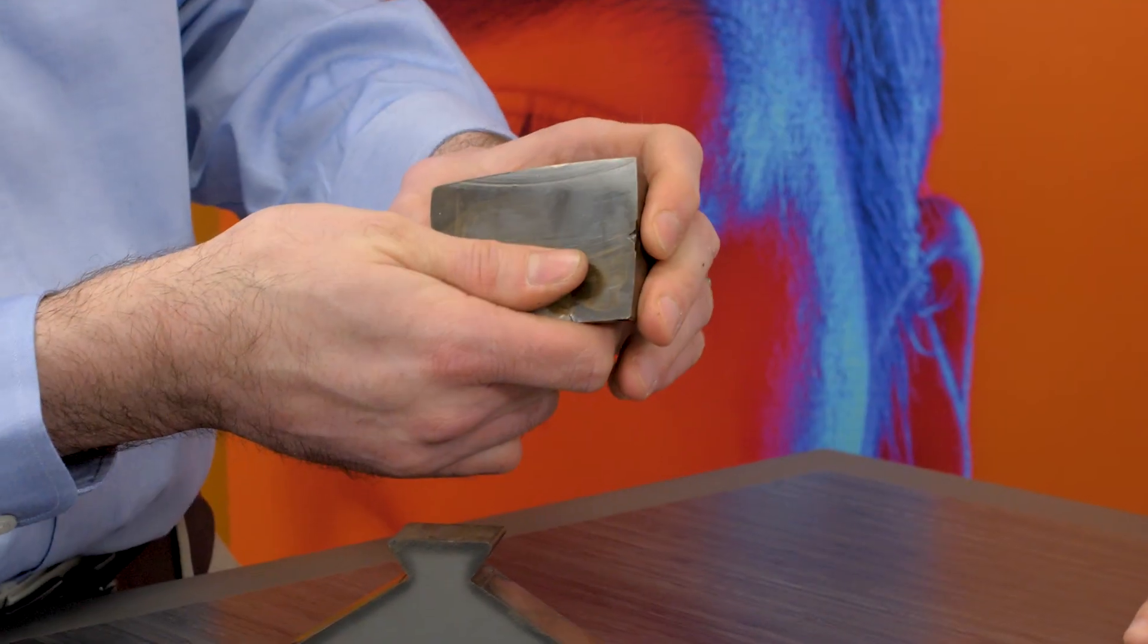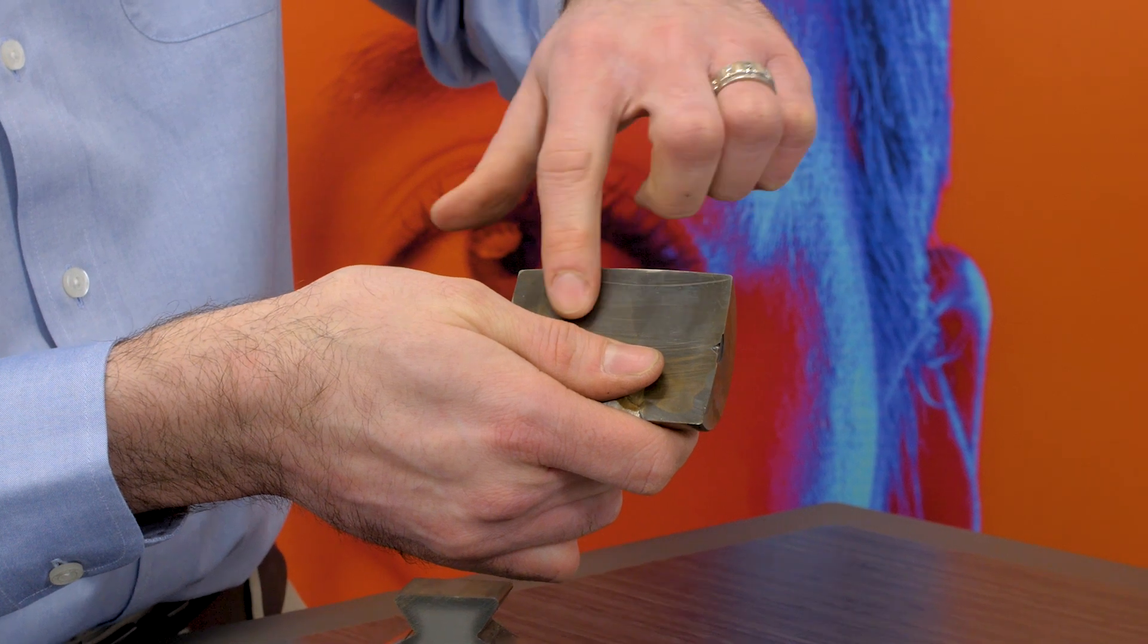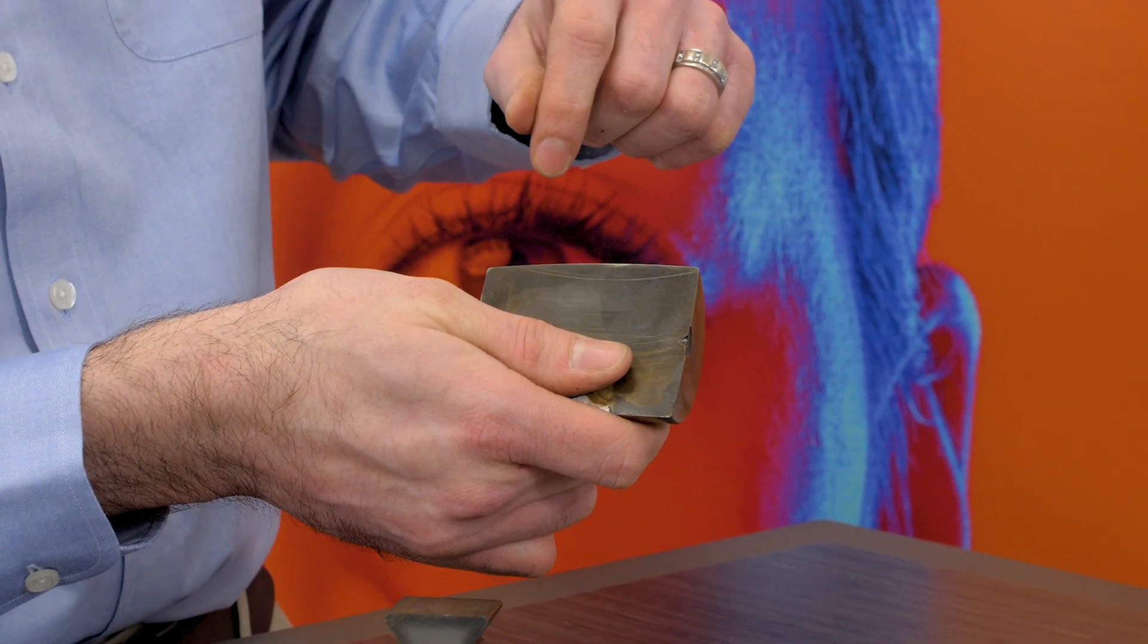And what do we have over here? This is a through harden example. Basically, what's interesting about this is you can see the dark layers all the way through.